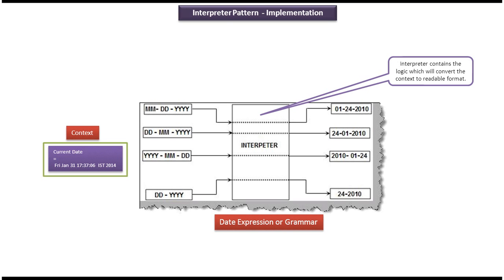Now we will see the scenario where we can use the interpreter design pattern. Here you can see the context. Context has the data which we want to interpret. So in this case, context has date. And here you can see different date expressions: month-date-year, date-month-year, year-month-date, and date-year. So these are all different expressions.